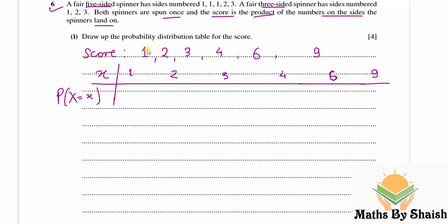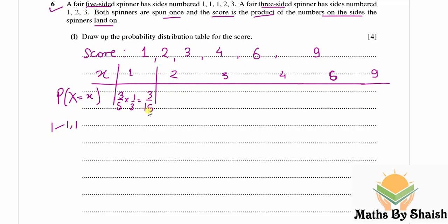Now let's calculate the corresponding probabilities. For X=1, we need both spinners to show 1. On the five-sided spinner, the probability of getting 1 is 3/5 (since three sides show 1), and on the three-sided spinner it is 1/3. So P(X=1) = 3/5 × 1/3 = 3/15.